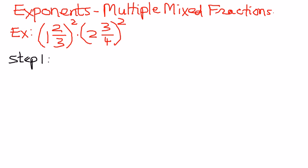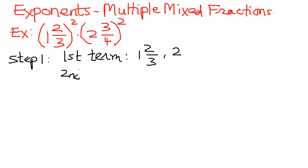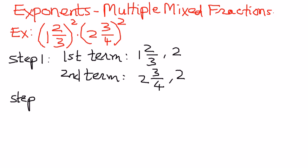Step number one: we have two terms here. In the first term, the base term is 1 and 2 over 3, and the exponential term is 2. For the second term, the base term is 2 and 3 over 4, and the exponential term is 2. We're going to apply the concept: the number of times the base term needs to be repeated is given to us in the exponential term.